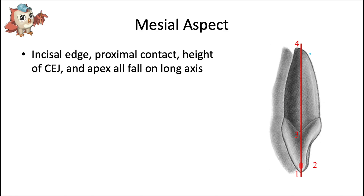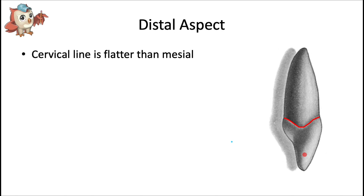To review: the cervical line is always convex toward the apex from facial and lingual views, and concave toward the apex from mesial and distal views. From the mesial and distal aspects, several landmarks conveniently fall along the long axis: the incisal edge where the facial surface meets the incisal ridge, the proximal contact or height of contour, the height of the CEJ concavity, and the root apex. From the distal aspect, the cervical line is slightly flatter — another trend: the cervical line gets flatter the more distally and posteriorly you go from the midline.